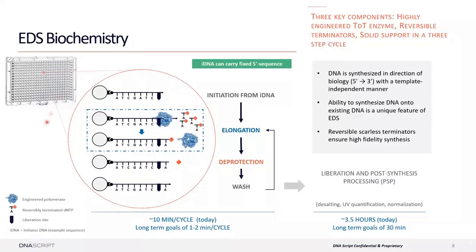The entire process is depicted in a cycle. Starting at the top, we have a solid support — a gray circle — with a small piece of DNA called initiator DNA, or iDNA, which gives our polymerase something to grab onto before it starts. We add the polymerase and our nucleotide of choice, and because of the blocked group, we add one nucleotide at a time. We then de-block, exposing the added base, add whatever nucleotide we want next, and repeat this cycle of elongation, deprotection, and washing for as long as we want our DNA. If you're familiar with Illumina chemistry, this principle will look similar.